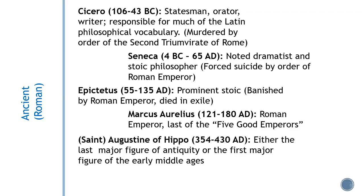Last on the ancient list, we have Augustine of Hippo — Hippo being a town in Northern Africa. If you've heard of St. Augustine, that's him. He's either the last major figure of antiquity or the first major figure of the early Middle Ages — these divisions between historical periods are very fuzzy and always retrospective. It's not like anyone at the time woke up one morning and said 'oh thank God, the ancient period's over.' These periods get their names many, many years after they're all over, and we don't really know what era we're living in now — that's the job of some future historian.